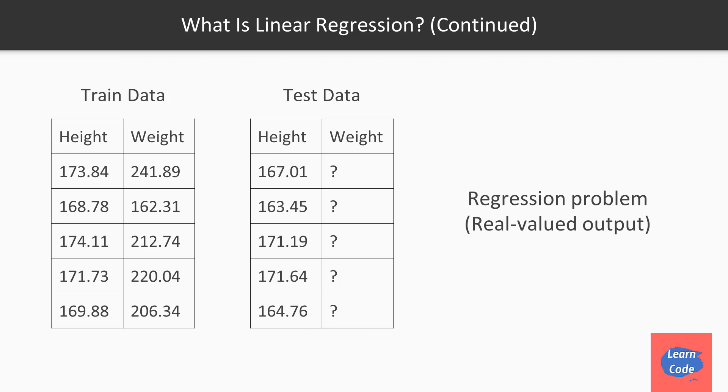We will use this data set to train our model and then pass it the test data set in which we have the individual heights but not the weights, and make predictions for the weights using the test data set. This type of problem is called a regression problem. A way to understand a regression problem is that it is always real-valued output.